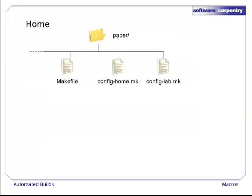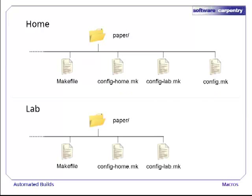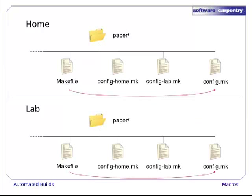For example, here's what we have in the paper directory on our home machine when we do a fresh checkout from version control. Along with our data files and the word processor file, we have our main makefile and the two machine-specific configuration makefiles. So we copy config.home.make to create config.make. Meanwhile, when we check out in the lab, we copy config.lab.make to create config.make. In both cases, our main makefile is now happy because the file it's including exists and has the right definition of styledir.